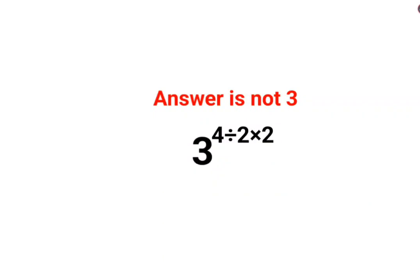Welcome everyone. A lot of people thought the answer for this question is supposed to be 3 because we have 4 divided by 2 multiplied by 2, which can be written as 4 divided by 2 multiplied by 2 is 4, so we have got it as 1. So 3 raised to 1, or any number raised to 1, is always the number itself. So the answer is 3.